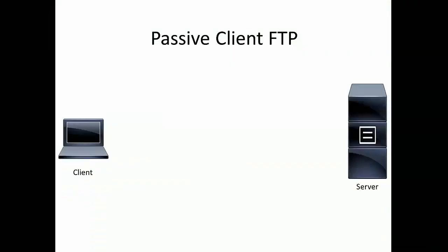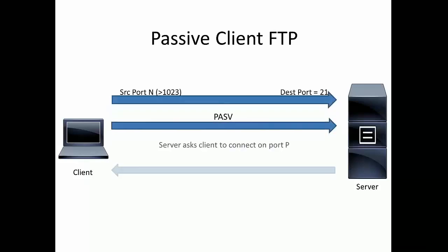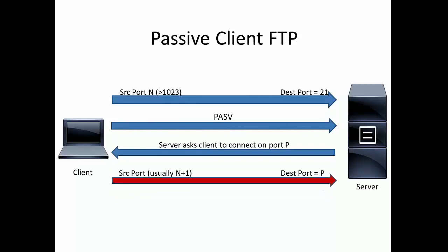The FTP client can also be passive. In this case, the initial command channel is initiated by the client itself on the destination port of the server, TCP 21. Once the client and server successfully authenticate, a PASV command is sent by the client. This tells the server that the client is going into passive mode, which makes the server send port information back to the client on which it should initiate the data channel. When the data channel is being initiated by the client, it uses a source port usually of n+1, adding 1 to the initial command channel port that it opened, going to the destination port P which the server communicates.